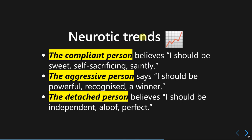To compare the three neurotic trends clearly: people with compliant personality would say, 'I should be sweet, self-sacrificing, and saintly to others.' People with aggressive personality would describe themselves as powerful, a winner, recognized, with prestige and ambition. People with detached personality would describe themselves as independent, aloof, and perfect. This concludes this section, and the next topic will be the idealized self-image.